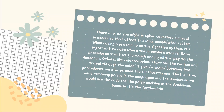There are, as you might imagine, countless surgical procedures that affect this long, complicated system. When coding a procedure in the digestive system, it's important to note where the procedure starts. Some procedures start at the mouth and go all the way to the duodenum. Others, like colonoscopies, start via the rectum and travel through the colon. If given a choice between two procedures, we always code the furthest one. So if we were removing polyps in the esophagus and the duodenum, we would use the code for the polyp excision in the duodenum because it is the furthest part of the body.